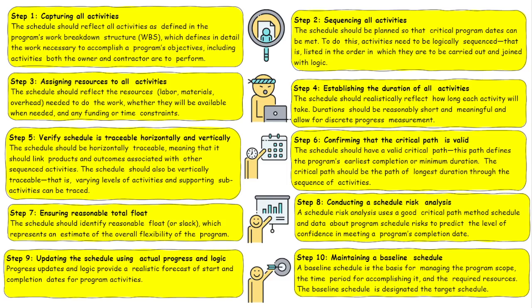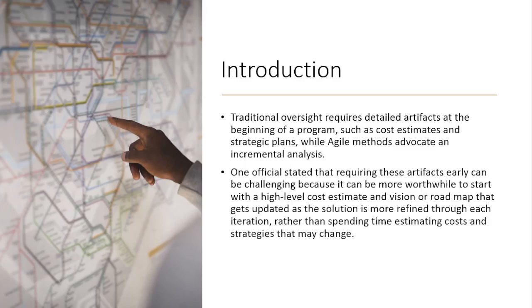They have to be renewed and refreshed so that you're not thinking in that linear way of: plan schedule management, define activities, sequence activities, estimate activity durations, develop schedule. It's not like that. Traditional oversight requires detailed artifacts at the beginning of a program, such as cost estimates and strategic plans, but Agile methods advocate an incremental analysis. When you tackle a schedule in the world of Agile, it is not done at the granular level that we do in a lot of predictive projects.